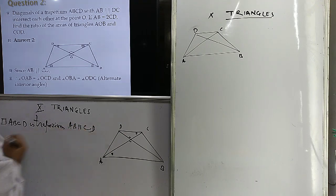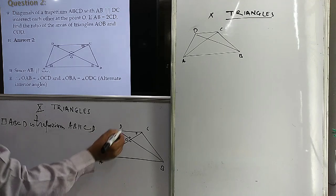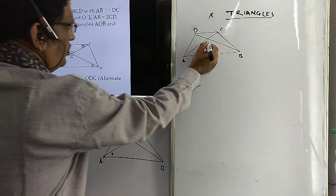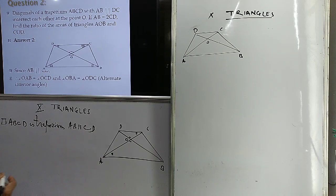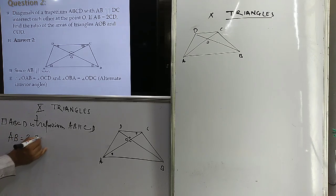Another thing given is that the diagonals intersect each other at O. And another thing given is that AB is twice CD — AB is twice of CD.